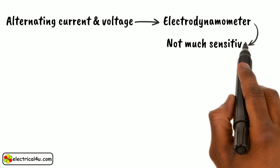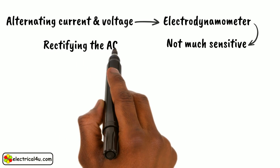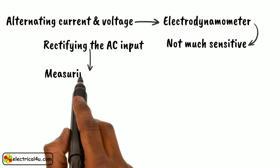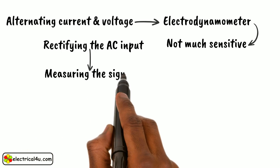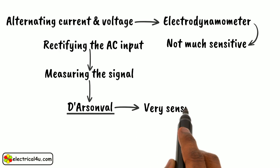The problem of low-sensitivity associated with the Electro-Dynamometer can be overcome by rectifying the AC input and by measuring the signal by D'Arsonval type instrument. Because D'Arsonval movement is very sensitive to electrical signal.